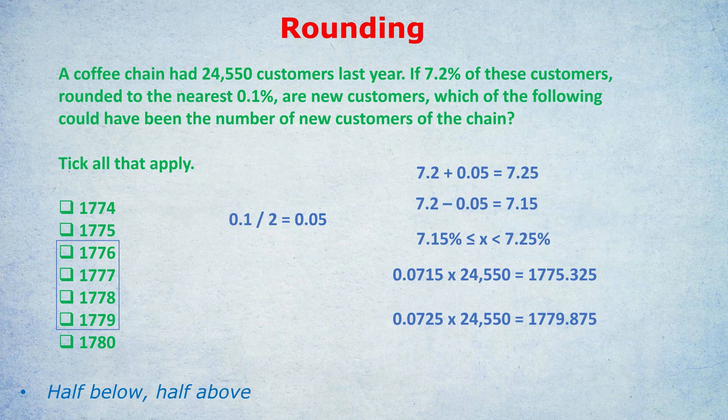Likewise, 1,779.875 is the upper bound, so we can't reach 1,780. The last option is not valid, but 1,779 is included, and all numbers between those. So the correct answer here would be C through to F.